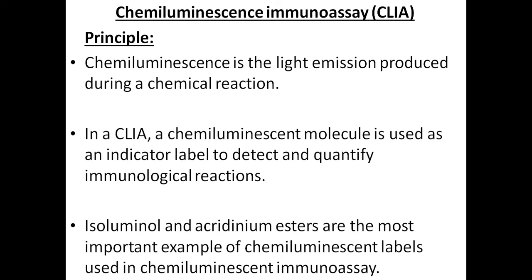The next type of immunoassay is chemiluminescent immunoassay, called CLIA. The Maglumi 2000 instrument used in our lab is based on this chemiluminescent immunoassay principle. Chemiluminescence is the light emission produced during a chemical reaction. In CLIA, a chemiluminescent molecule is used as an indicator label to detect and quantify immunological reactions.